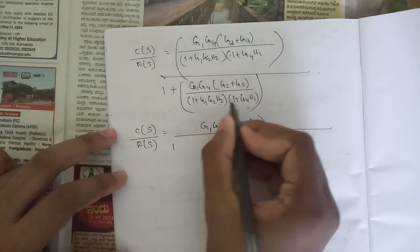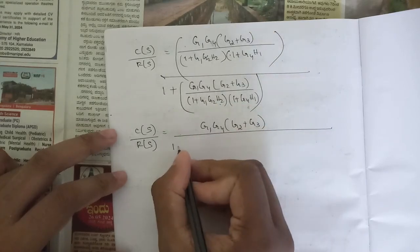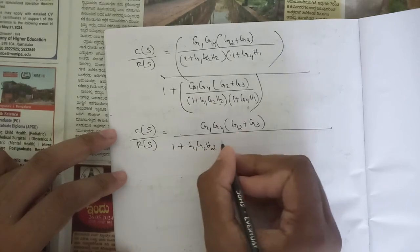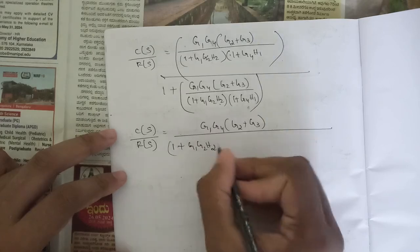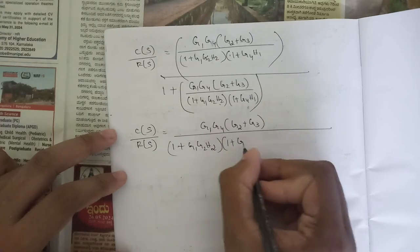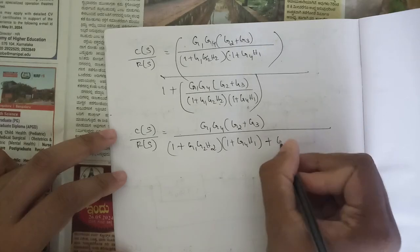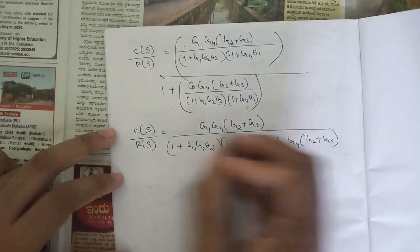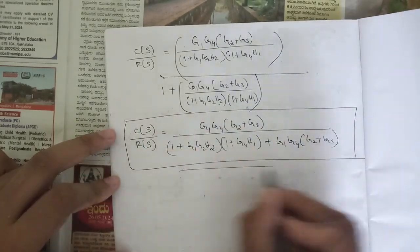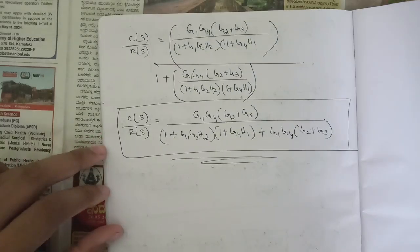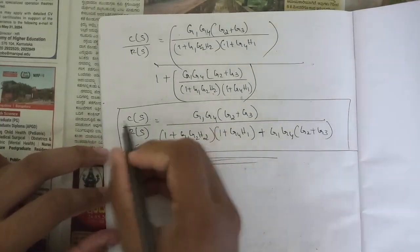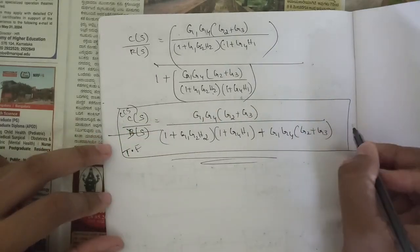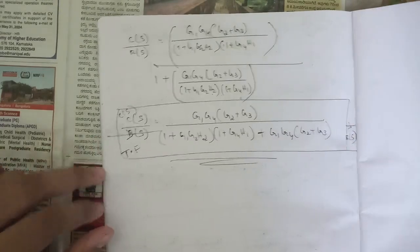...1 times this whole term, that is (1 + g1·g2·h2)·(1 + g4·h1), plus g1·g4·(g2 + g3). This is the final value of the transfer function C(s)/R(s). You need to write it in a single block, representing this as C(s) and this as R(s).